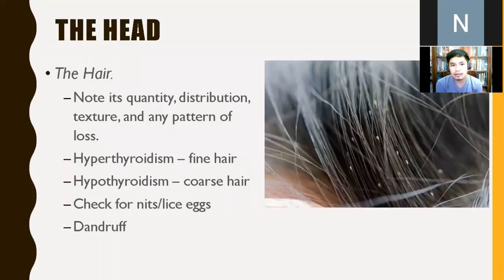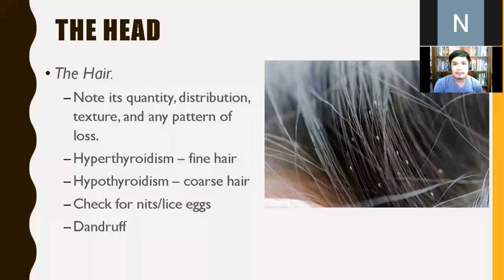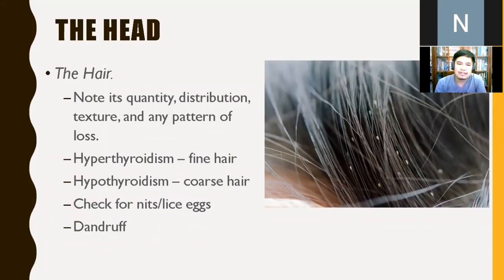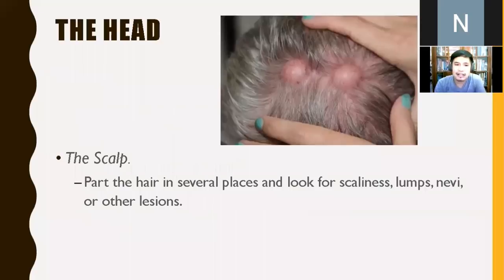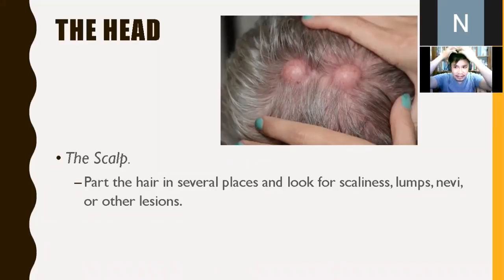Note the quantity of hair, its distribution, and any areas of alopecia — areas without hair — and any patterns of loss or baldness. Some disease conditions manifest in hair texture, for example: fine hair in hyperthyroidism versus coarser hair in hypothyroidism. Check for infestations — lice, nits, lice eggs — and dandruff. For the scalp, part the hair in several places and look for scaliness, lumps, and other lesions. Make sure to really part the hair to see the scalp, especially for female patients with tied hair.